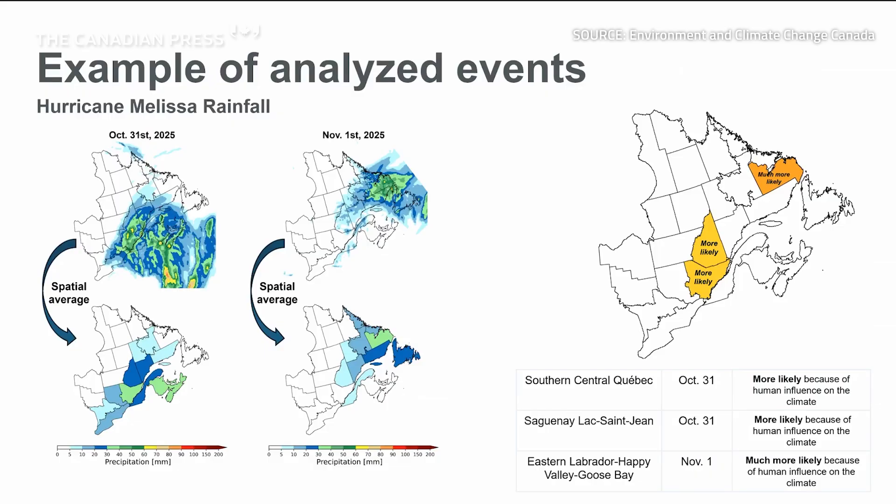You can see here maps of daily precipitation over eastern Canada for October 31st and November 1st. The system compares the average amount of daily precipitation over each region depicted in the maps to the climatological value of extreme daily precipitation over that region.